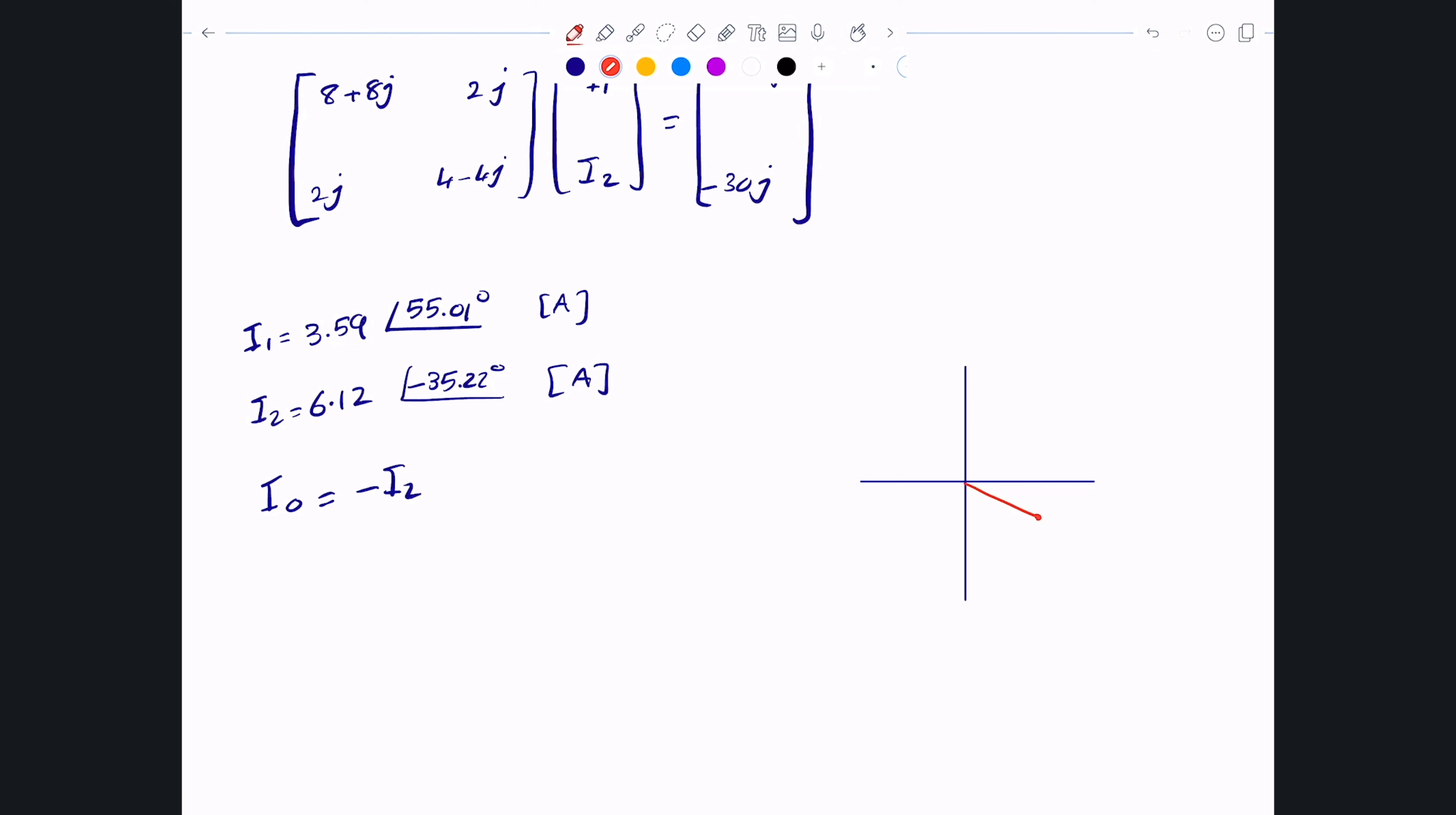The way it works is the following. I'm going to draw I2 here, so I2 will be something like this. I2 is actually from the cosine, I'm assuming everything is from the cosine. From here to here is -35.22° and the magnitude for this I2 is just 6.12.